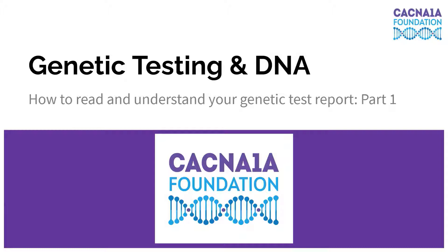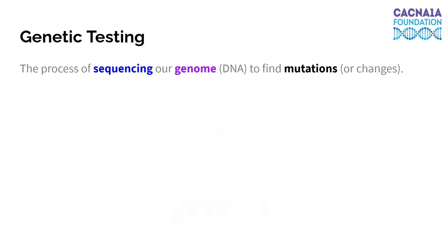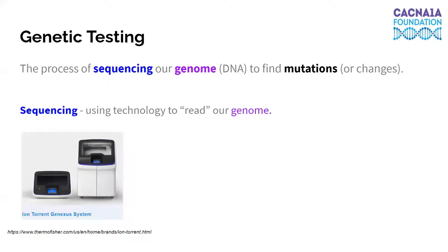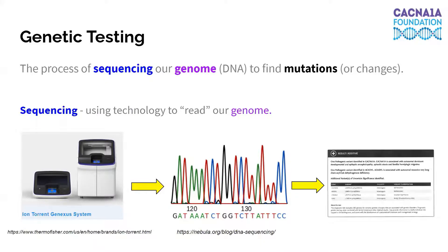Today's video is going to focus on genetic testing and DNA. So what exactly is genetic testing? Well, this is the process of sequencing our genome or our DNA to find mutations or changes. Sequencing refers to using technology to physically read our genome, done by using special machines called sequencing machines like the one shown here. A DNA sample can be placed in this machine, and the readout might look something like this, where every single peak and every single color corresponds to one of the letters in our DNA. The machine also has the capability to scan through all of the letters it's just read and find the ones that are different from what's most commonly found in the human population. And that's what gives you your genetic test report.